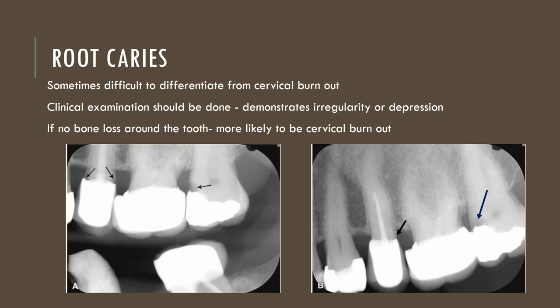When you probe the area and check, it should demonstrate irregularity or depression if root caries is present. If there is no bone loss around the tooth, then it is more likely to be cervical burnout. These images of a bitwing show secondary caries on the root surface, which is also visible on a periapical view. Root caries can be viewed on the second molar and in the premolar region on the periapical view as well.